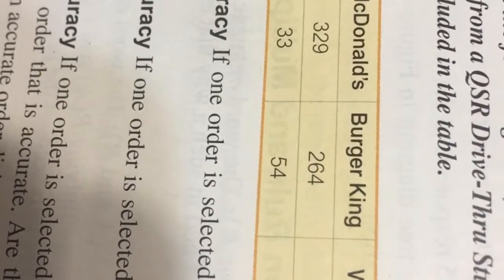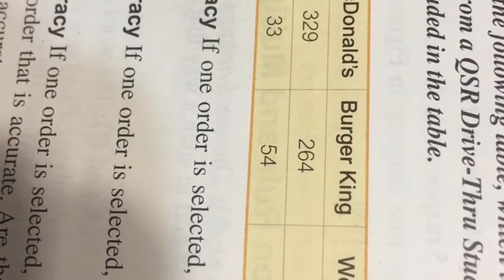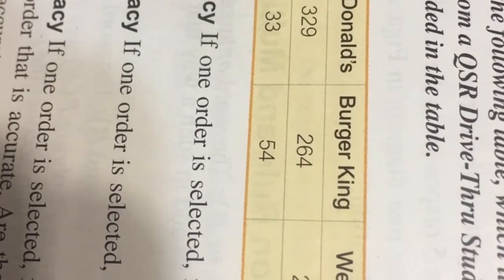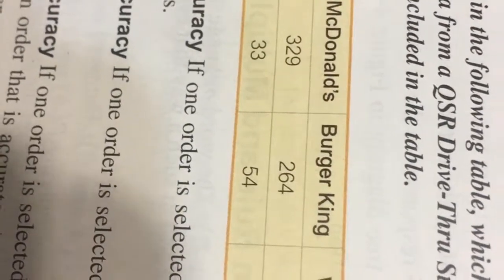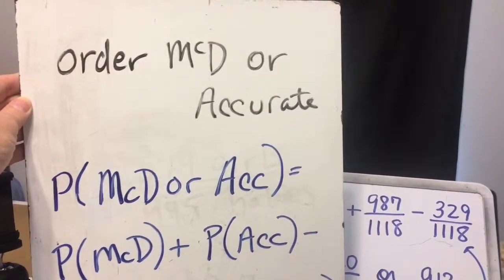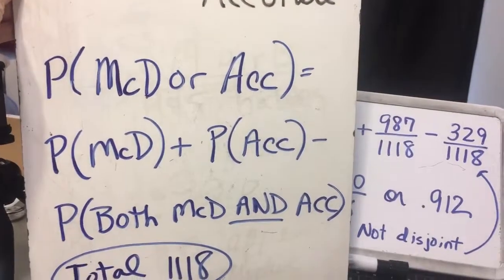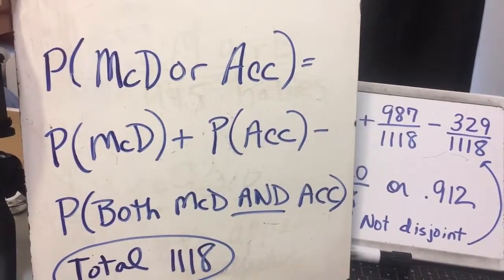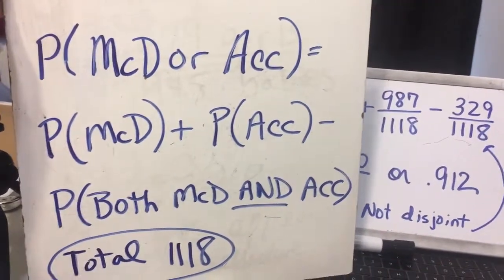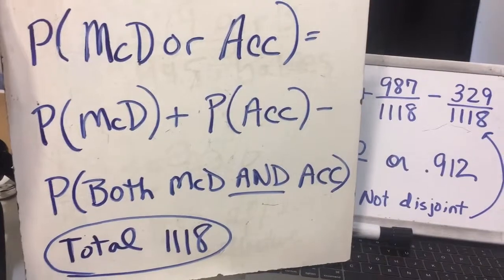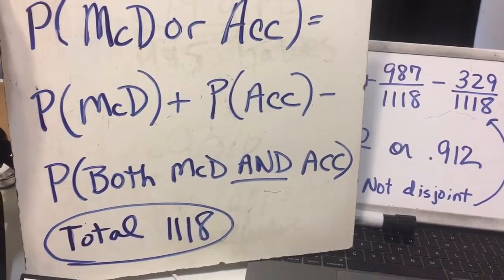Therefore, the two events are not disjointed. Remember, they can only be disjoint events if they cannot happen at the same time. We can get accurate orders from McDonald's, so we're going to use our addition rule. The probability of McDonald's or accurate is the probability of McDonald's plus the probability of accurate minus the probability it is both McDonald's and accurate.